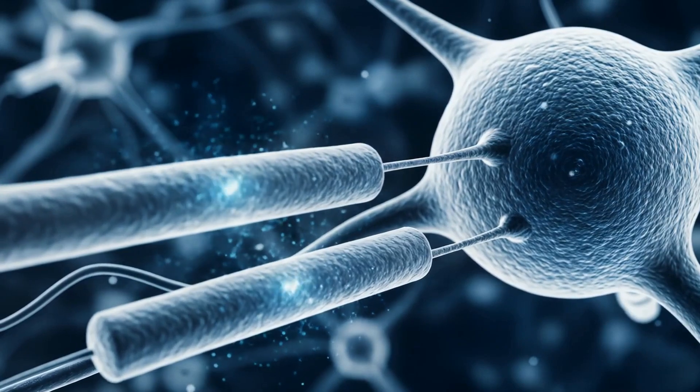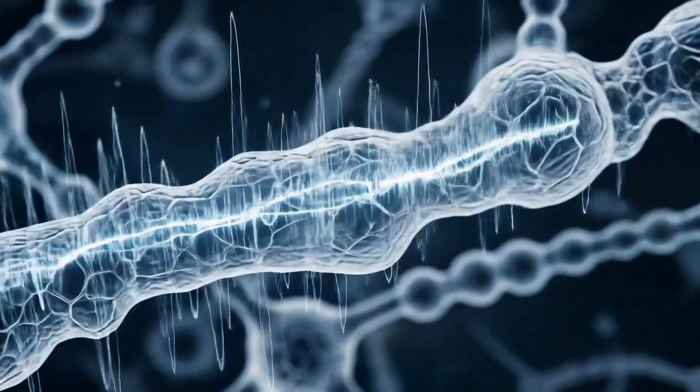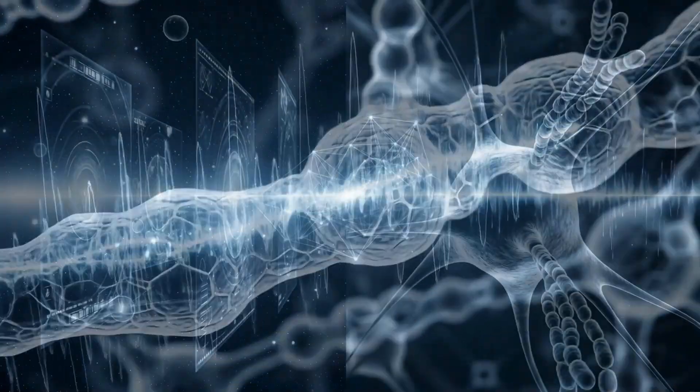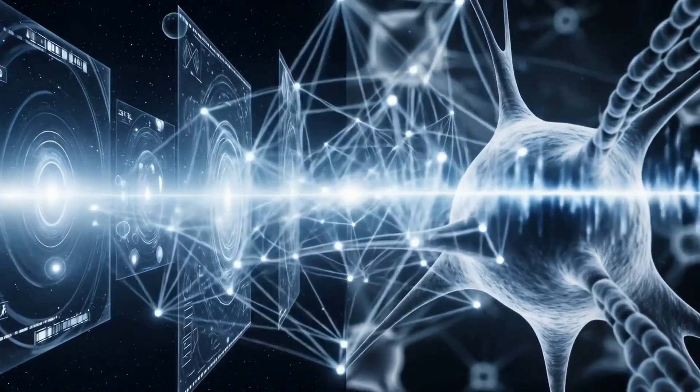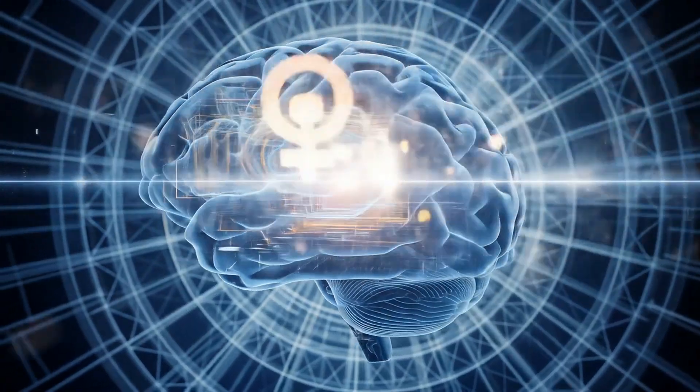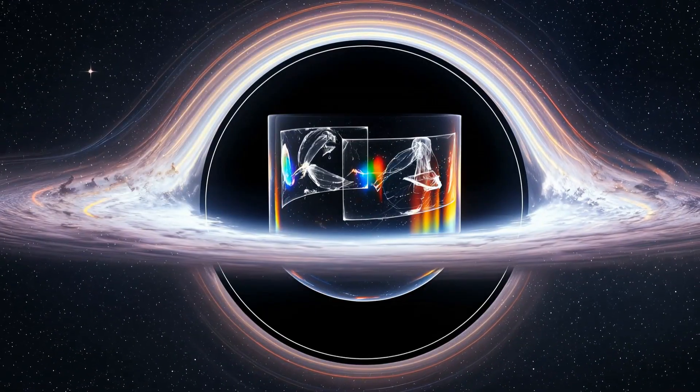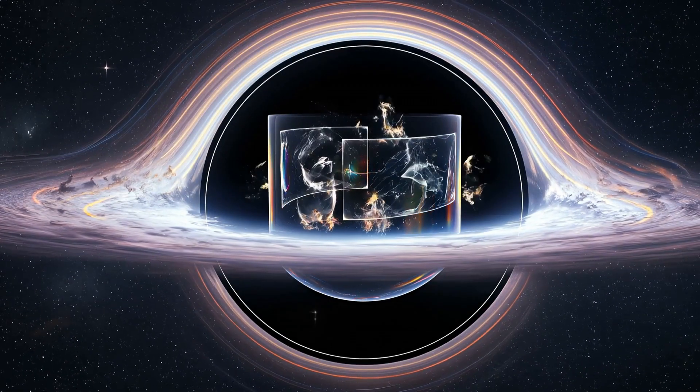Microtubules inside your neurons act as quantum resonators. They are Planck-scale qubit lattices in biological form, receiving and projecting quantum state vectors through entanglement. Your brain is a holographic interface, a living event horizon that decodes the singularity's information into your experience of reality.